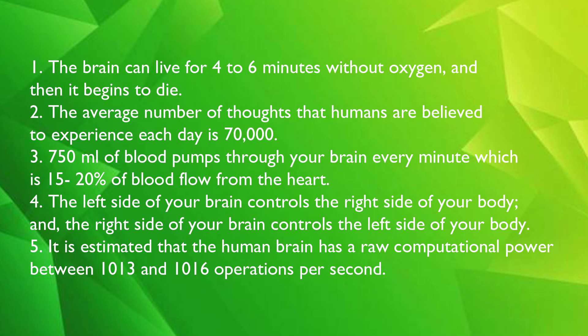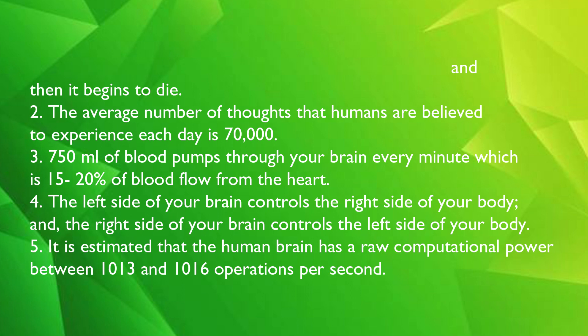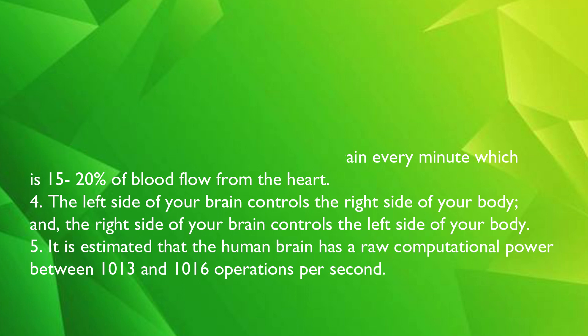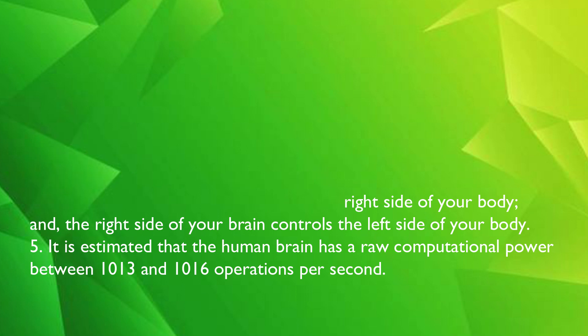The left side of your brain controls the right side of your body, and the right side of your brain controls the left side of your body. It is estimated that the human brain has a raw computational power between 10^13 and 10^16 operations per second.